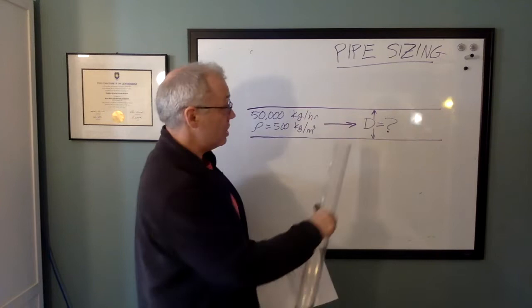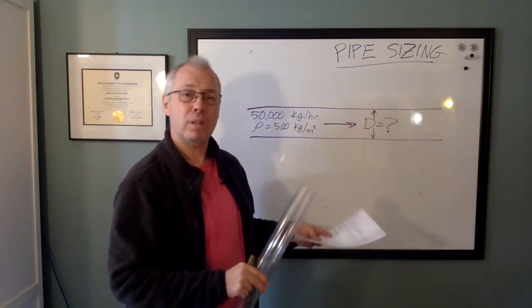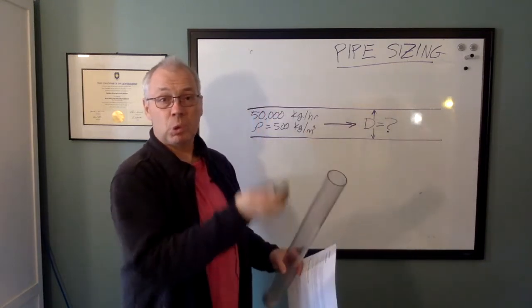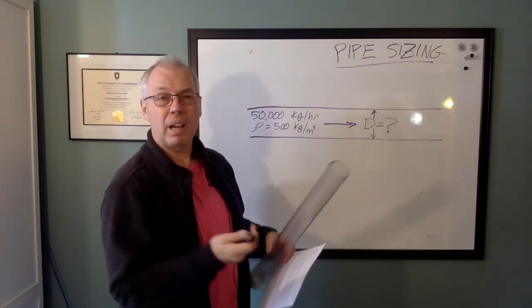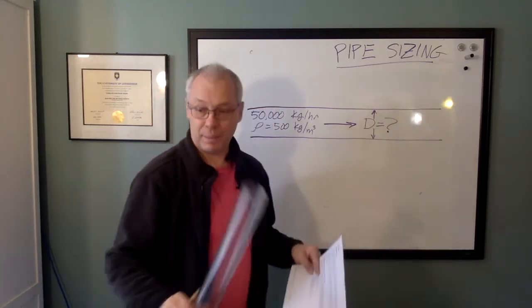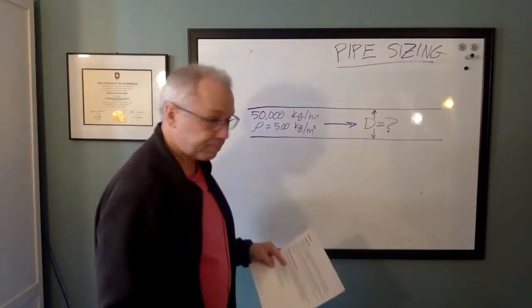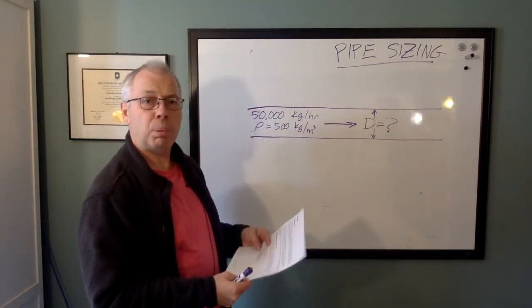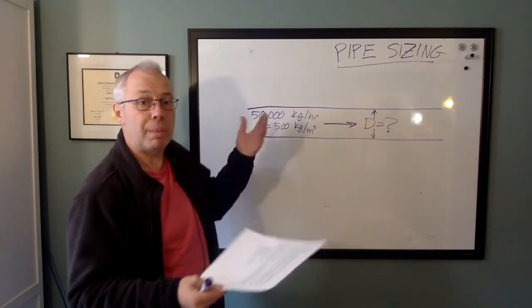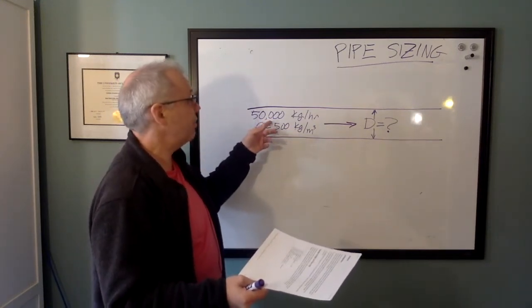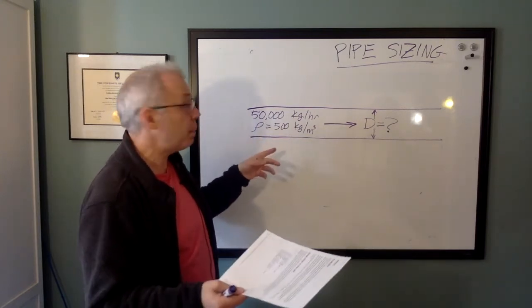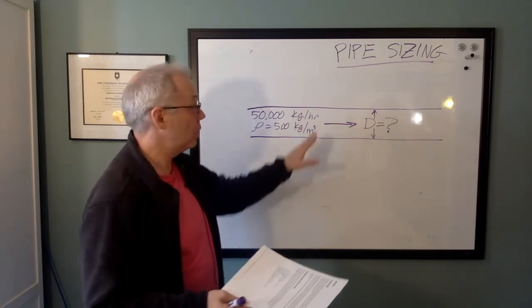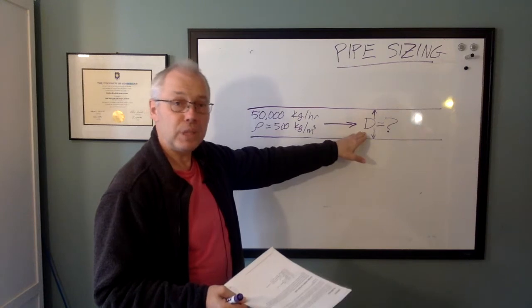So the question of the day is, what size diameter do you need your pipe to be? Do you need a two-inch line or a three-quarter inch line? How do you calculate it? That's what we're going to look at. We're going to look at this with an example. The example we're going to pick is 50,000 kilograms an hour of liquid propane. Propane has a density of 500 kilograms per cubic meter, and we want to decide what inside diameter is needed for this pipe.